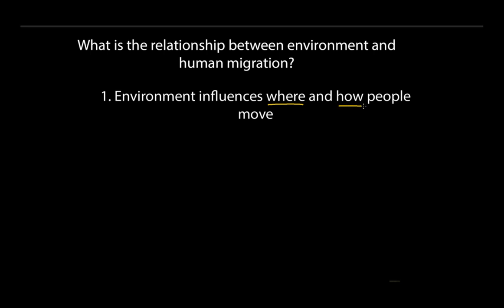We might be looking at whether the climate is suitable for practicing agriculture. Food production is such an important part of human movement and human survival in new environments. We might also look at transportation — in the Pacific Ocean, for example, getting from island to island requires technology that allows you to travel over the ocean for long distances.